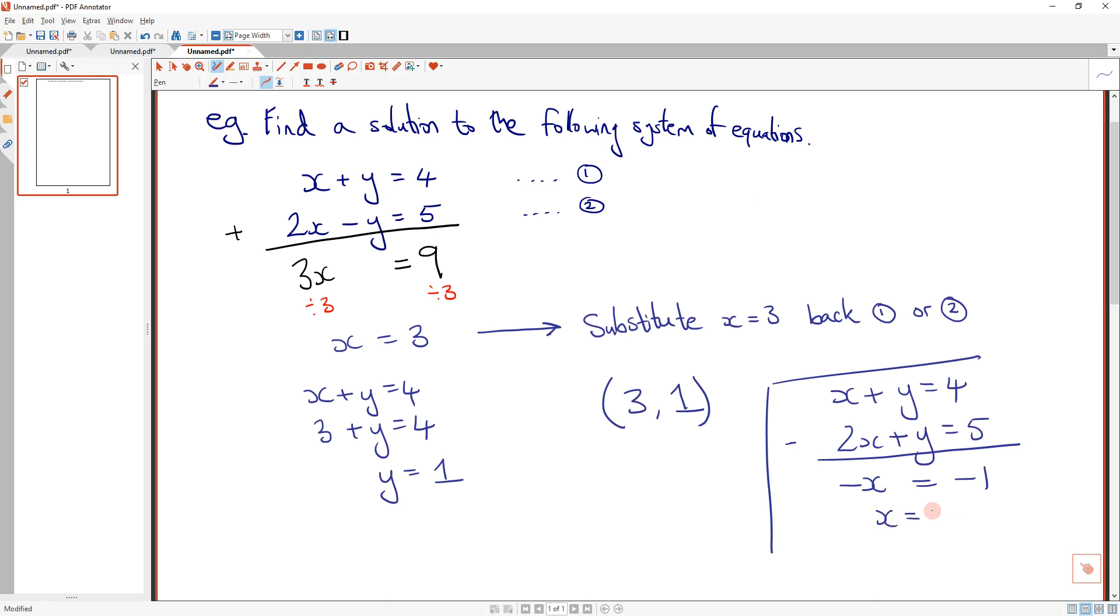So what's x equal to? Positive 1. And then I can find out what y is by subbing it back in. So what would y be? 3. Why would it be 3? So it's still 3, comma 1. Nope, it would be 1, comma 3. So you have to look at the signs of these things to make sure that you're either subtracting or adding.